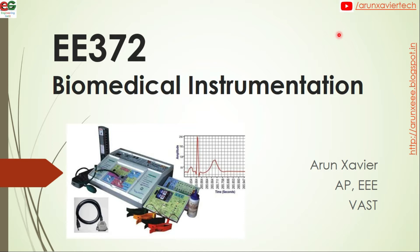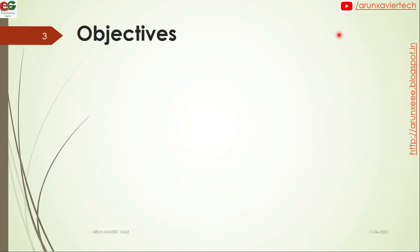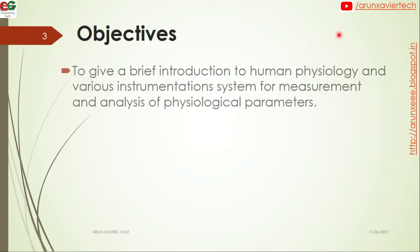The subject code is W372. The subject credit is 3, and the main objective is that the human psychology and the various instrumentation systems that we mainly use for the analysis of different parameters. We use different types of instruments and study — that is the subject of biomedical instrumentation.